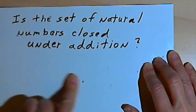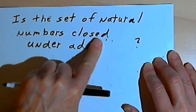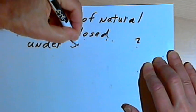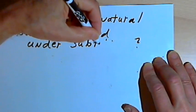Okay, so what about subtraction? What if the question had asked is the set of natural numbers closed under subtraction?